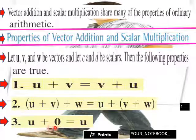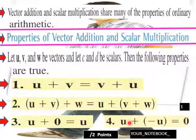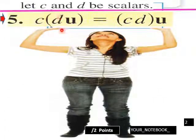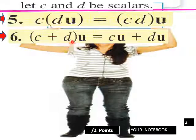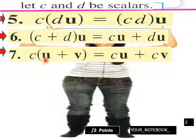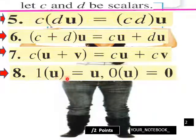Number one: u plus v equals v plus u. Number two: (u plus v) plus w equals u plus (v plus w). Doesn't that look a lot like ordinary properties of arithmetic? Number three: u plus zero equals u. Number four: u plus negative u equals zero. Let c and d be scalars. Five: c times (du) equals (cd) times u. Six: (c plus d) times u equals cu plus du. Seven: c times (u plus v) equals cu plus cv. Eight: one times u equals u, and zero times u equals zero.